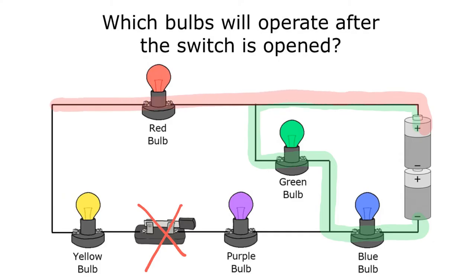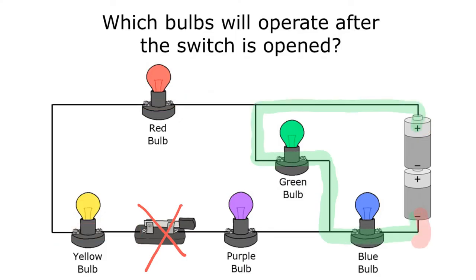But tracing the other outer path, I'm not able to complete it because I have to go through that switch — and remember, even though it looks closed in the picture, the question told us to open it. Electricity can't flow through the red and yellow bulbs and can't even reach the purple bulb because that switch is open. If electricity can't go all the way through a path, it won't go through that path at all. Even starting from the other direction through the purple bulb, I'd still get to that open switch and couldn't reach the yellow or red bulbs.